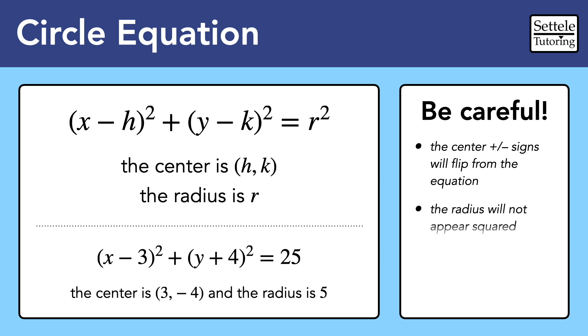We also need to remember that the radius will not appear squared, because the radius is a number, so we would just simplify it by actually squaring it. To find the radius, we should take the square root of the number that will typically be on the right side of the circle equation. So in this case, 25 told us that the radius is 5.